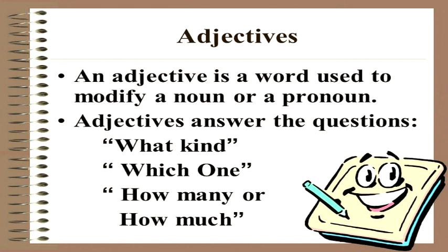Before we start the next category of adjectives, let us have a quick recap of what is an adjective. An adjective is a word used to modify a noun or a pronoun — it describes a noun or any pronoun. Adjectives answer the questions: what kind — any quality, which we have done in the previous session as adjective of quality; which one — also adjective of quality; how many — adjective of number; or how much — adjective of quantity.